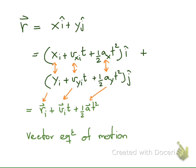We can see that the mathematical form is very similar to the scalar equations. But the main difference is that all the quantities here are vectors. So we call this the vector equation of motion.